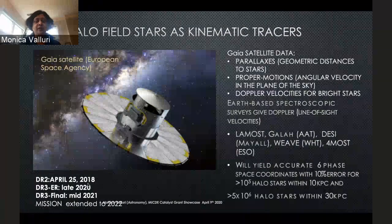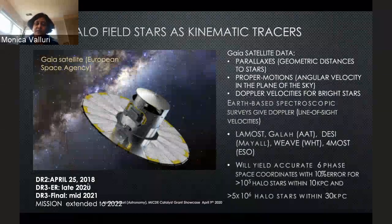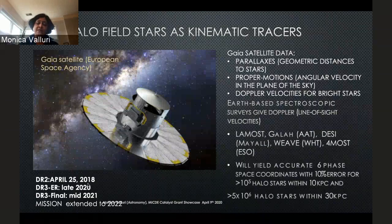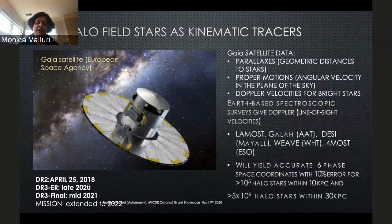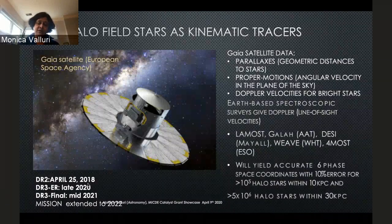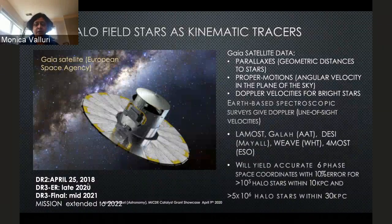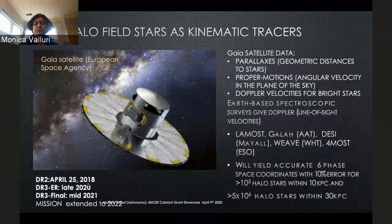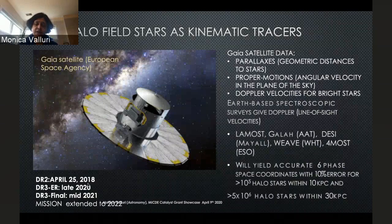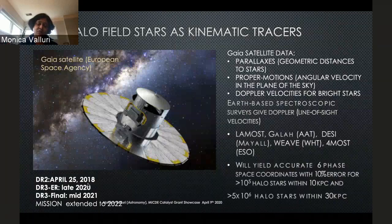Future data releases are expected in the coming years. The satellite obtains parallax — geometric distances to stars — and proper motions, that is, their motion across the plane of the sky, for a billion stars. It also obtains Doppler velocities for about 100,000 of the brightest of these stars. There are also ground-based spectroscopic surveys which give additional Doppler velocities. Our goal is to model something like several million of these stars, which lie within about 30 to 40 kiloparsecs from the center.